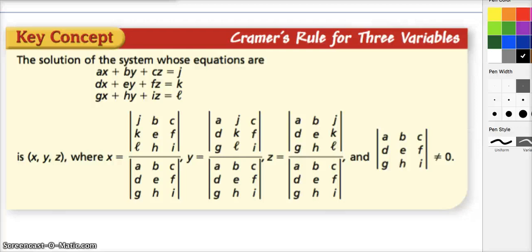The second thing is, there's a pattern here. To get the denominator determinant, watch this: A, B, C, D, E, F, G, H, I. Just ignore the answer and use the problem as given. To get x just like last time, if I ignore the column with the x values, I'm only using the columns that are left. The answer column first: J, K, L. Then the y column: B, E, H. Then the z column: C, F, I.